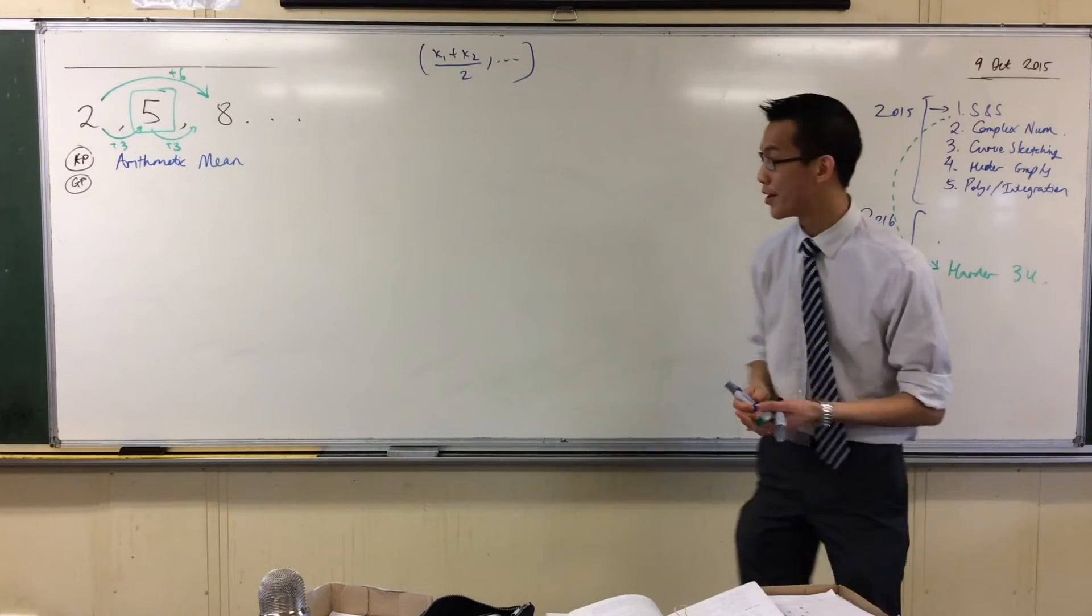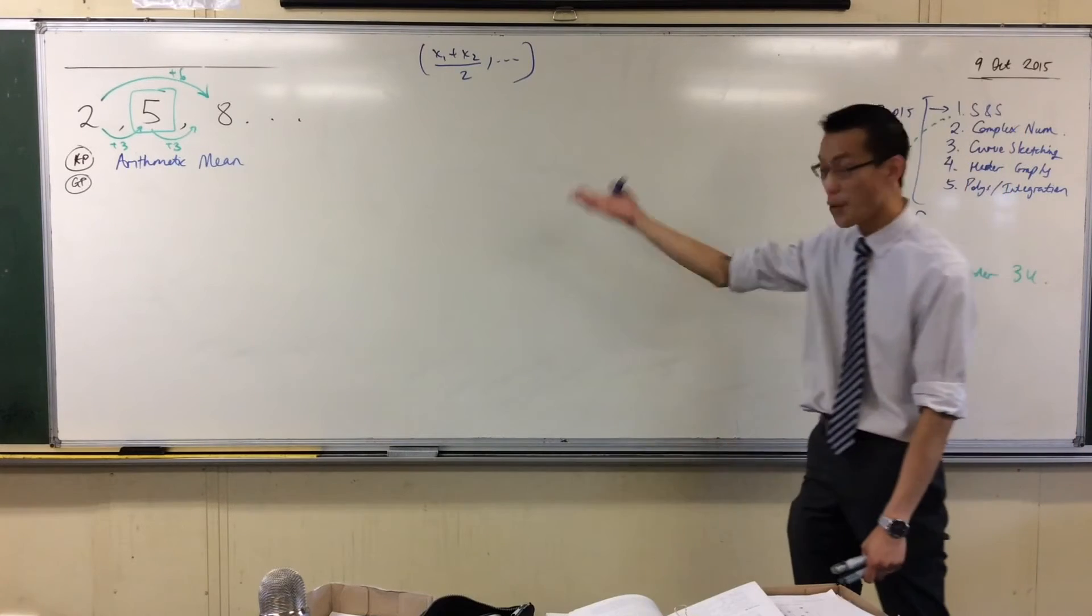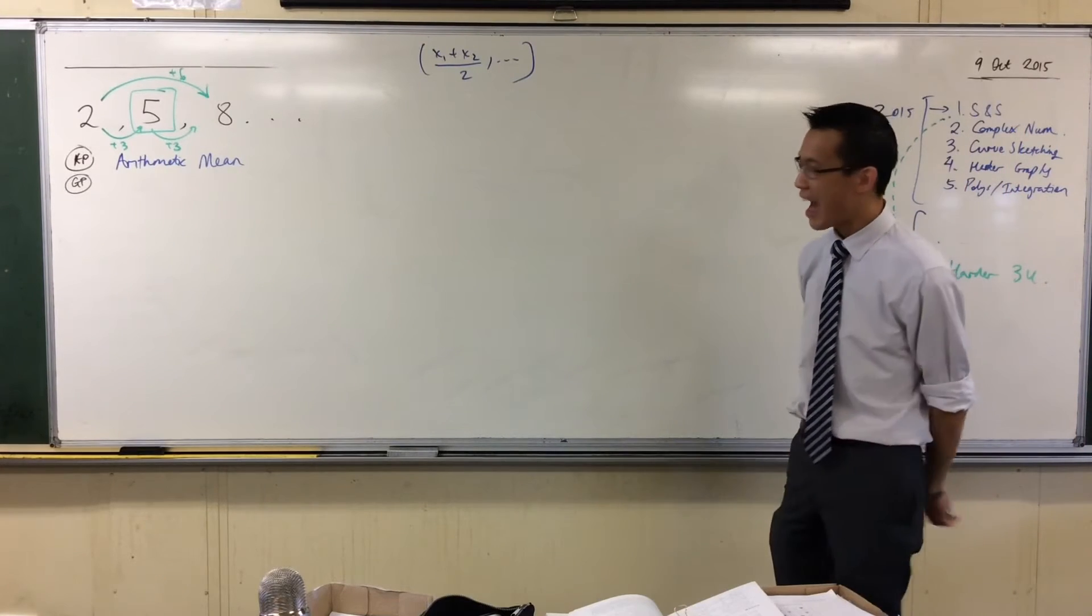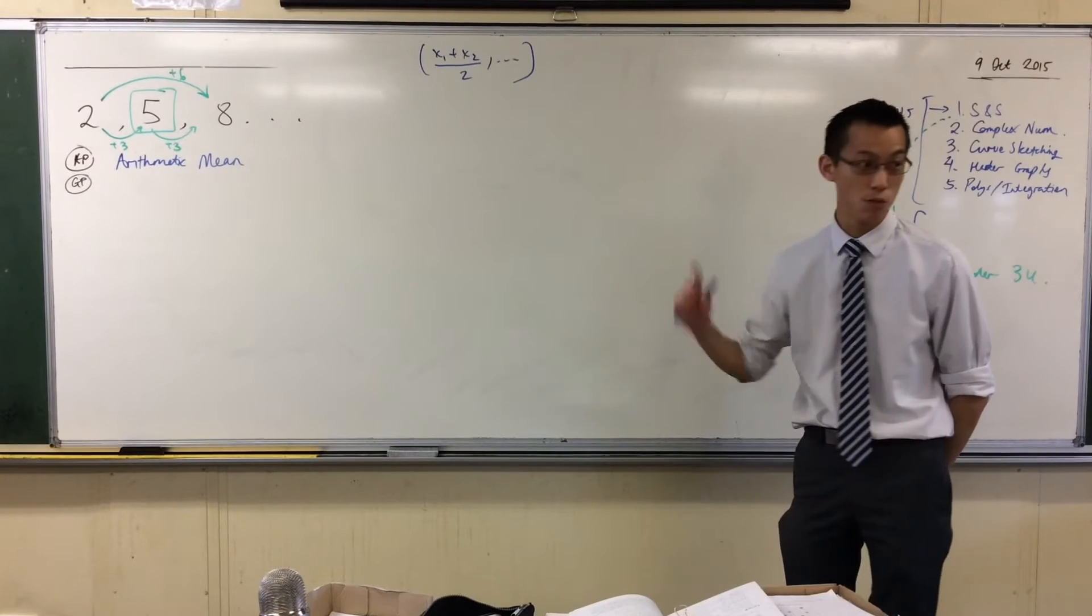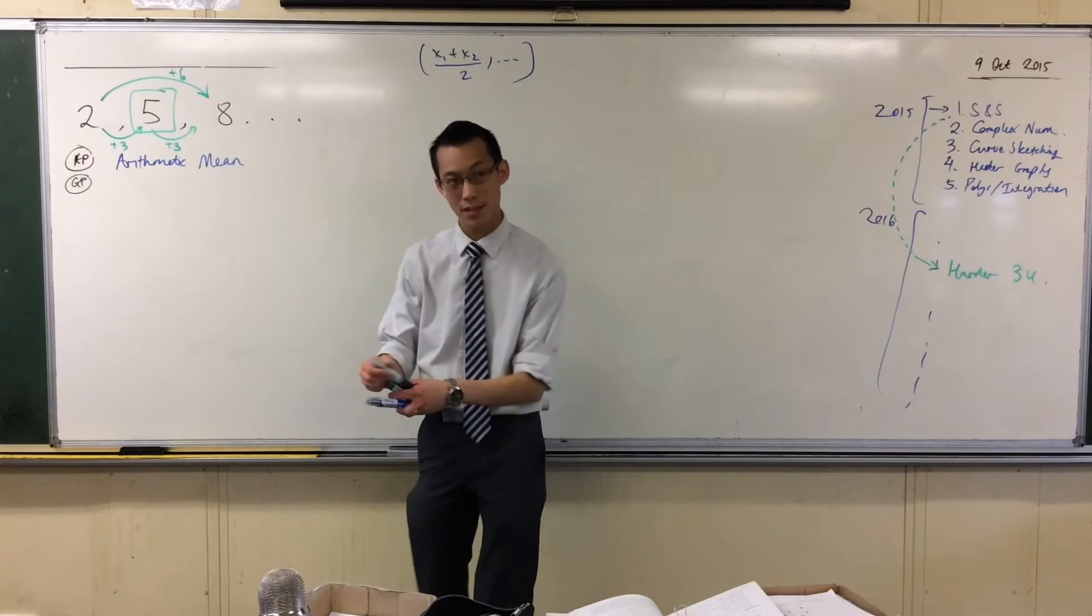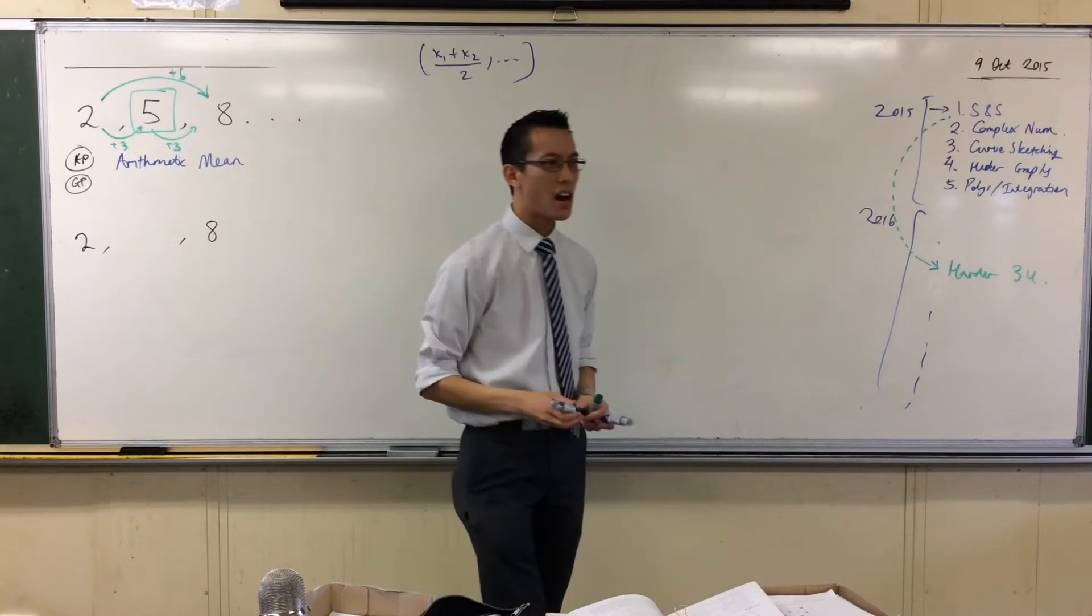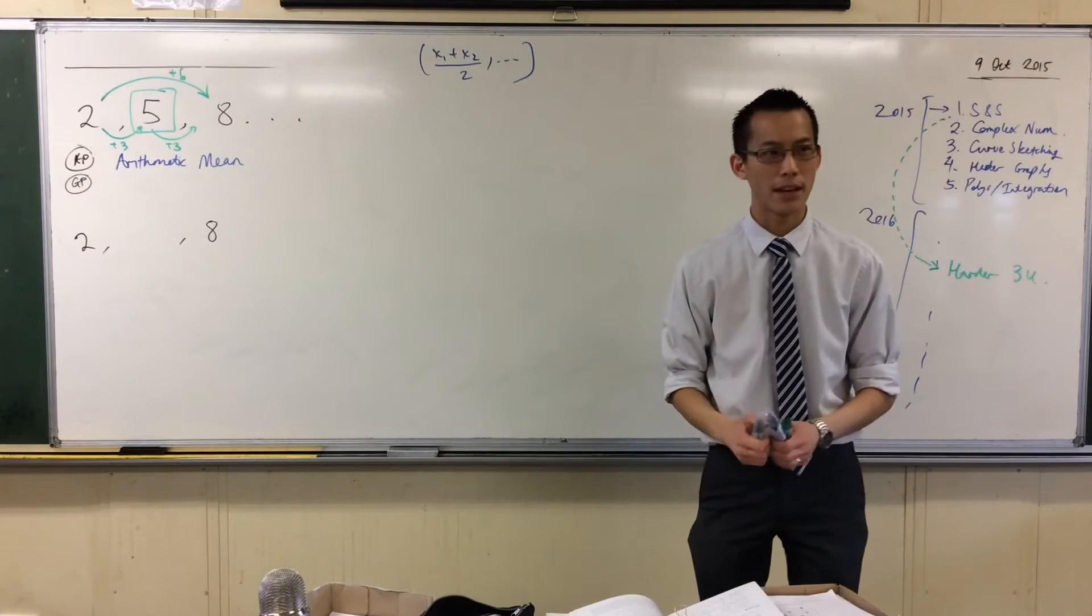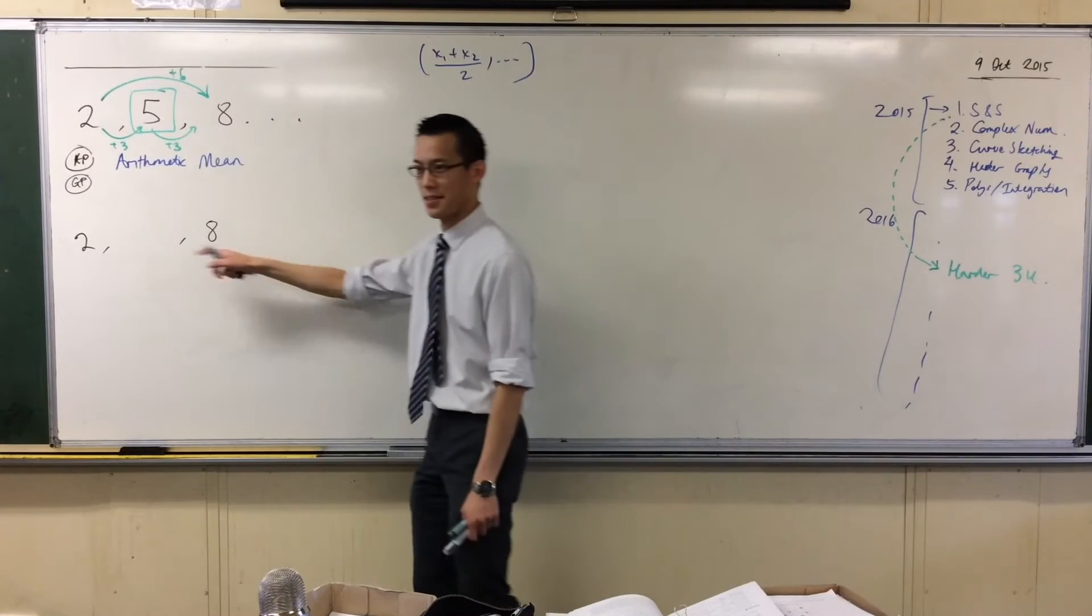Now you've never had to qualify the word mean before with an adjective, because you haven't known about any other mean. That's the only kind that there is. In fact, there are many, many different kinds of means. I'll tell you about at least two more today. But one more is important to us. Let me write these sequence of numbers again. Two, and then something, and then eight. Now I want to think geometric.